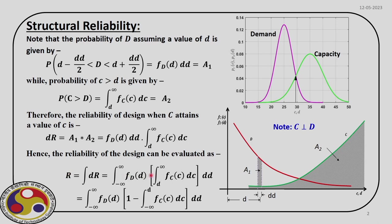We can rewrite the expression within the third bracket as 1 minus the integral from minus infinity to D of the CDF of capacity Fc(C) dc. This comes from the fact that the total area under the PDF is always 1. So we can reformat this bracketed term into the final expression for reliability R. Once we know the PDFs of capacity and demand, we use this final expression to evaluate reliability.